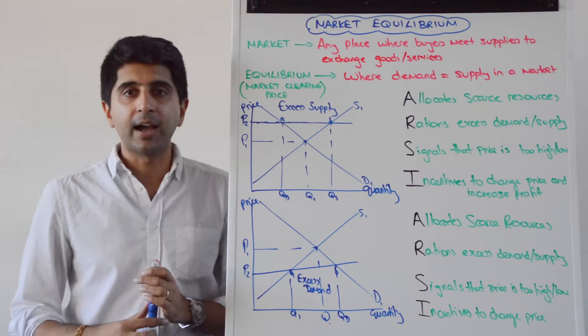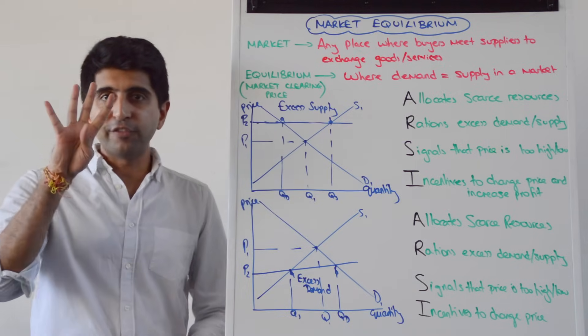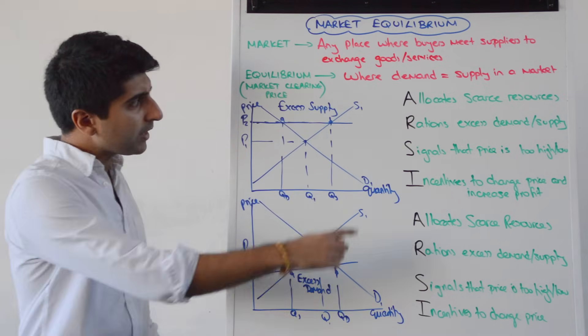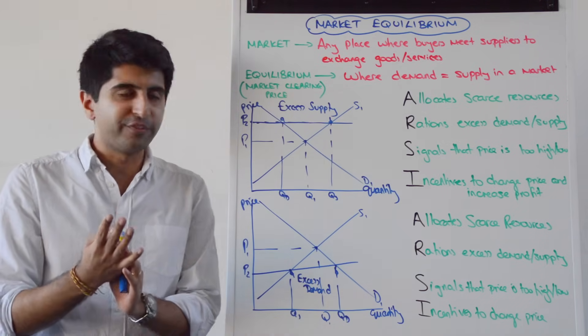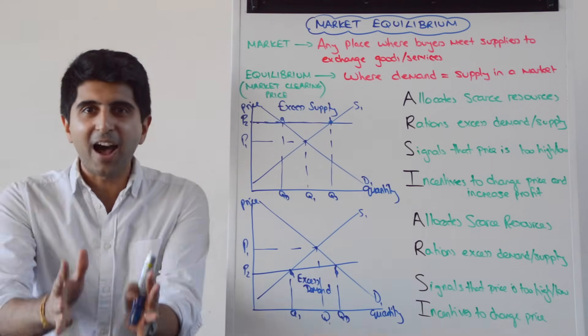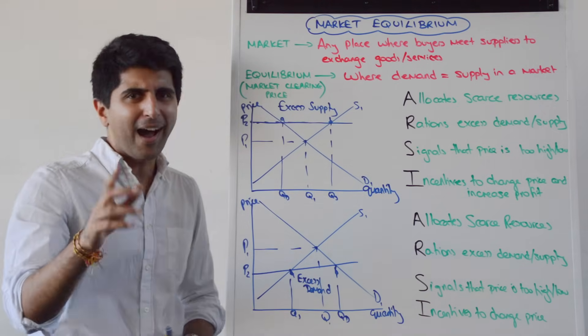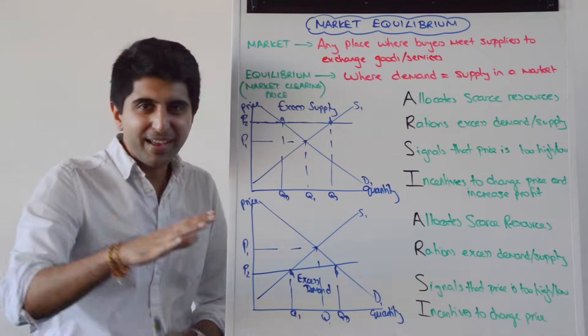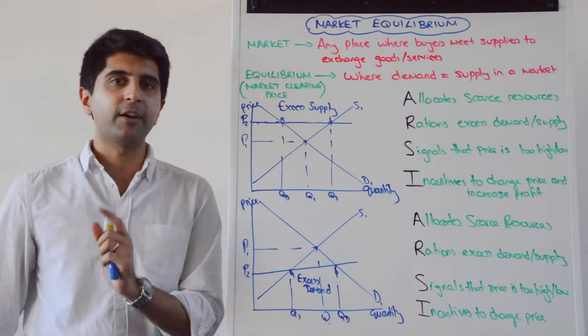Another name for a market is the price mechanism. And the price mechanism has got four functions to it. There is a lovely memory device to remember all these four functions. Just remember RARC. The market is RARC. A bit like you guys in the morning. Just learn it as RARC, a great little memory device.